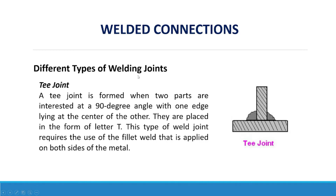Different types of welding joints. First, the T-joint: a T-joint is formed when two parts intersect at a 90-degree angle with one edge lying at the center of the other, placed in the form of the letter T. This type of weld joint requires the use of a fillet weld applied on both sides of the metal.